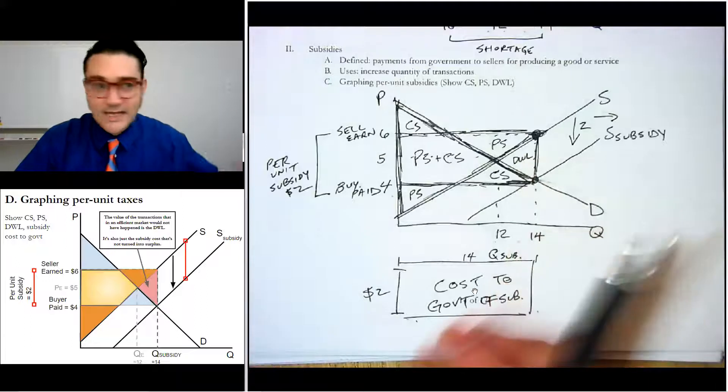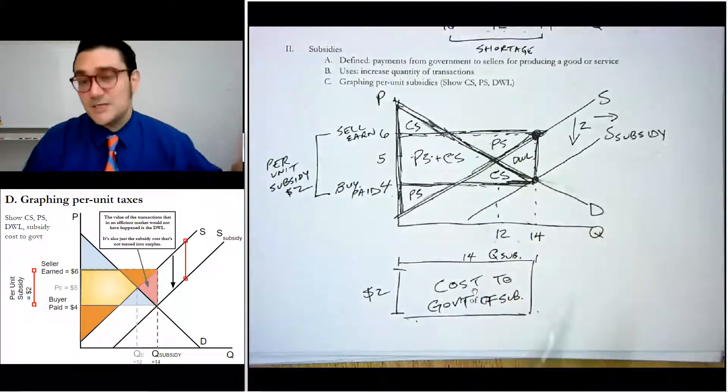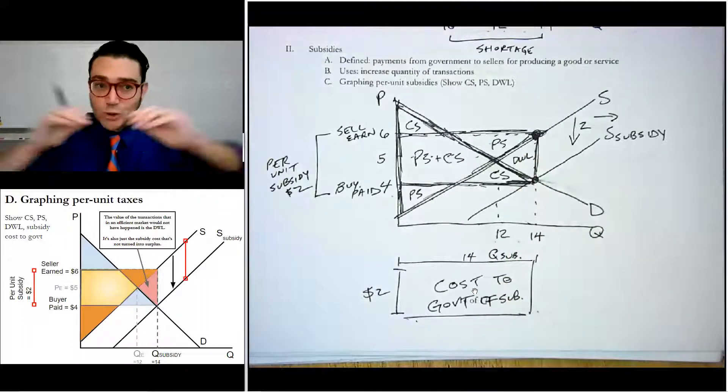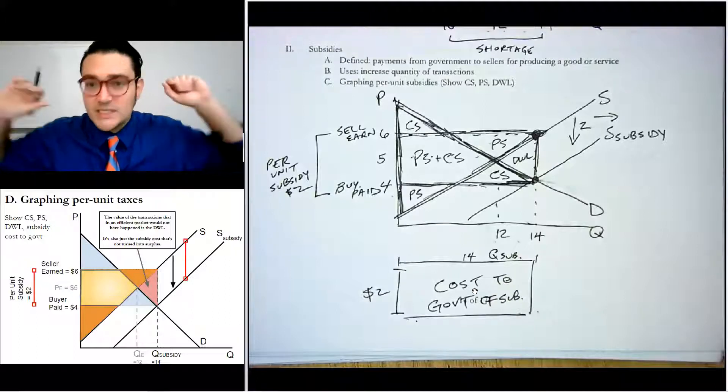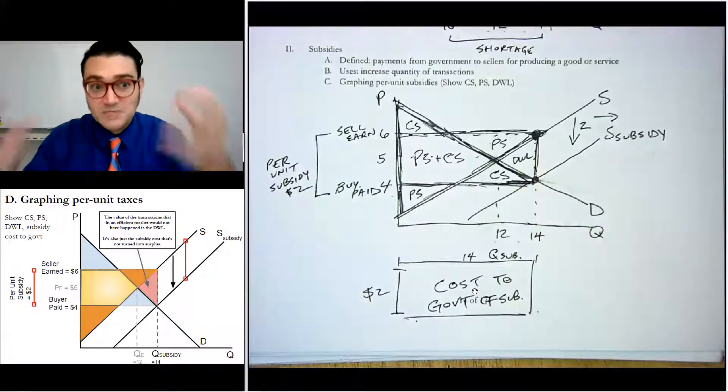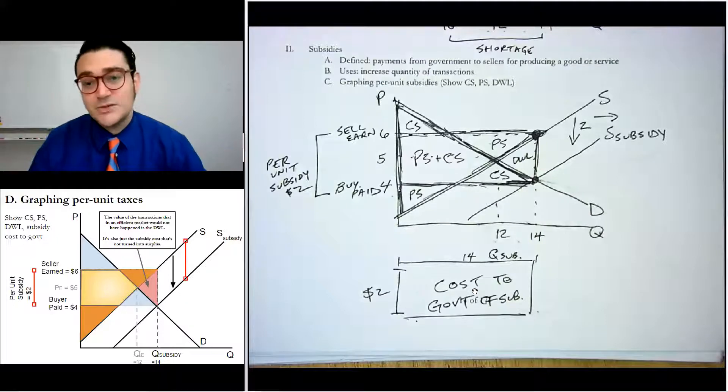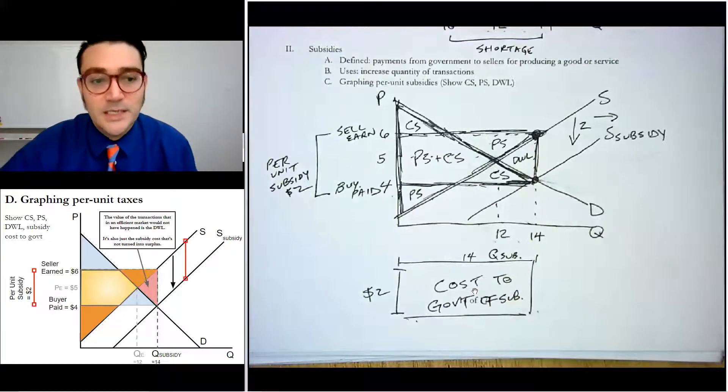And so these also, this money did not get transformed into surplus. That's the other reason why it's deadweight loss. It's just like gone, disappeared into the world. It's tax revenue money that we spent on something that didn't get transformed into surplus. That's why we call it deadweight loss.